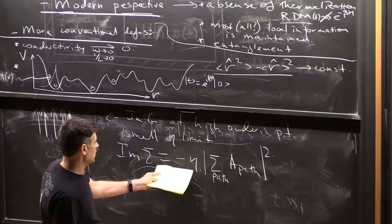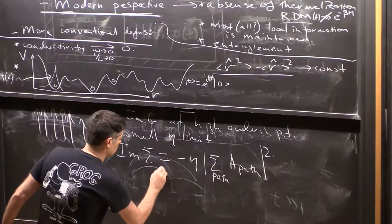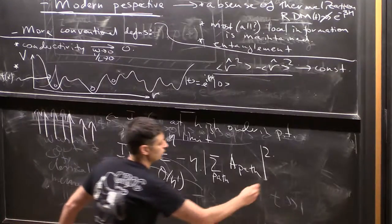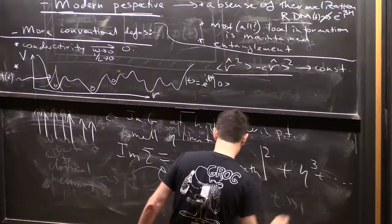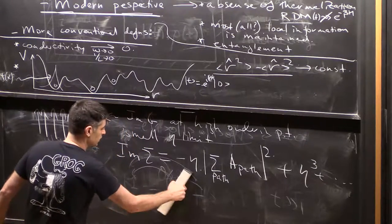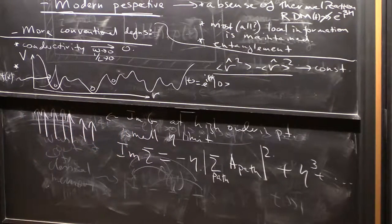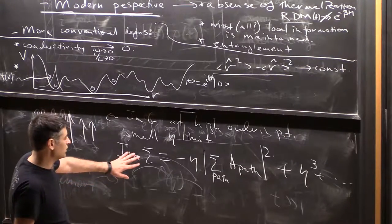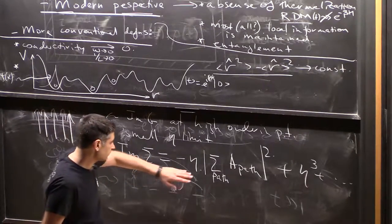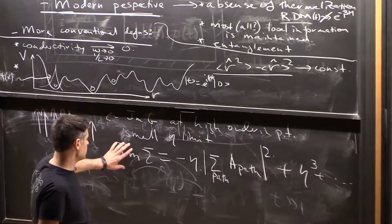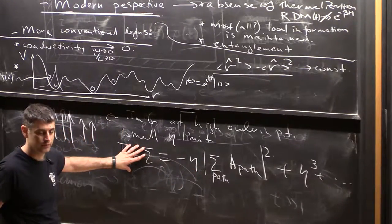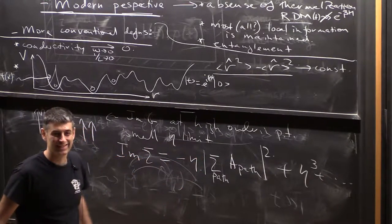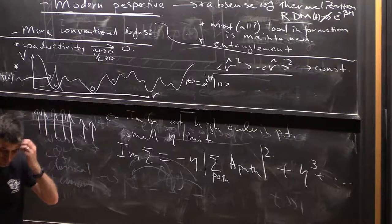The point is that this is order eta to the first power term only, so you get eta cube and blah blah blah. The question is puzzling. The situation is puzzling because by doing Taylor series in eta you've actually made the entire imaginary part of the self energy to be proportional to eta, and you might worry that this